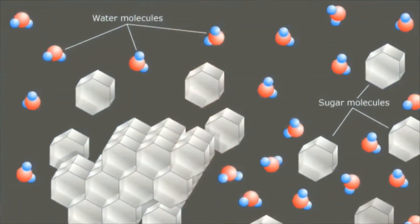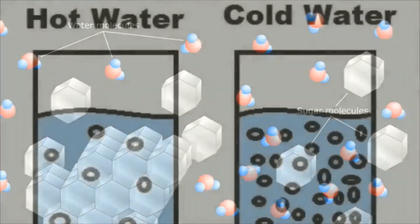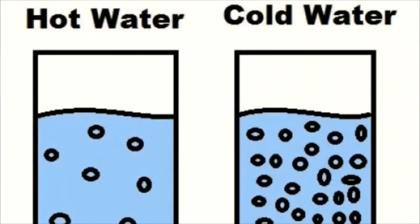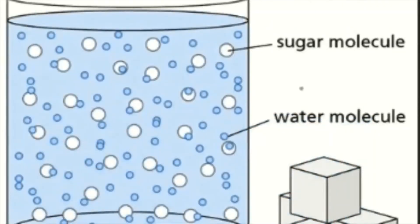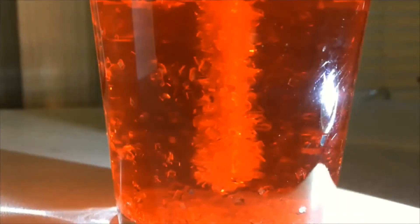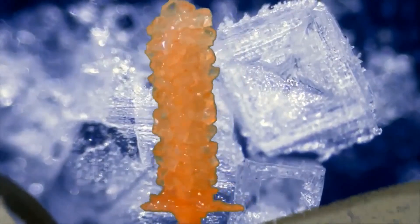Water and sugar are both molecules. When we heat the water, the water molecules spread apart. Now we have a lot of space where our sugar molecules can fit. As our sugar solution cools, the sugar begins to crystallize and these crystals form rock candy.